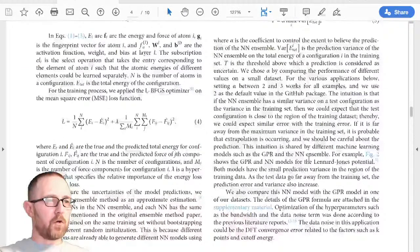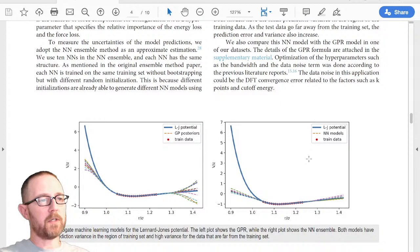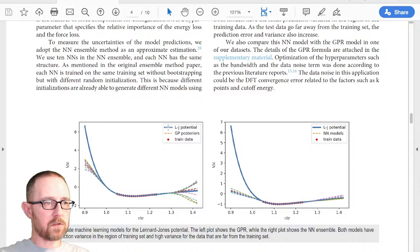Okay, so how does this work in practice? So here is a simple example in one dimension. We take the Leonard Jones potential, and this blue line here that's shown here. And we have these red data points where we can fit something to it. And I show two different versions here. One is on the right, neural networks, and one on the left, the Gaussian process.